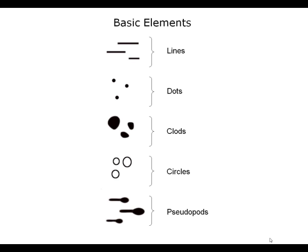In dermatoscopy, we have very simple basic elements, geometric objects. We use lines, like for example reticular lines, dots, and clods. What is a clod? A clod is a solid object that is larger than a dot and may have any shape. It may be round, it may be oval like a globule, but it also may be large and polygonal like a cobblestone.